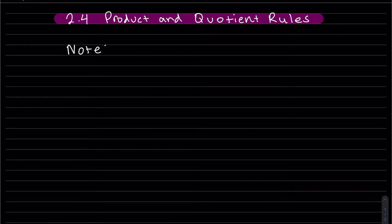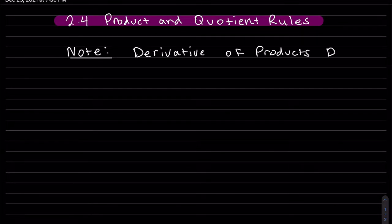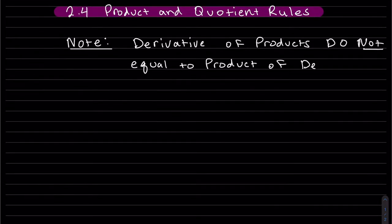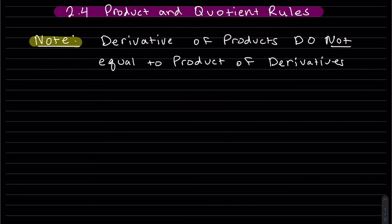Now here's a huge note. I mentioned this in my last video. The derivative of a product does not equal the product of the derivatives. So even though we have the derivative of a sum equals the sum of the derivatives, we don't have it for the product.